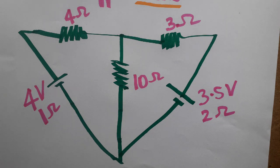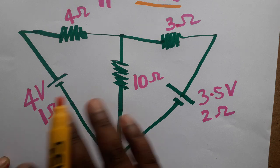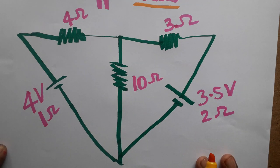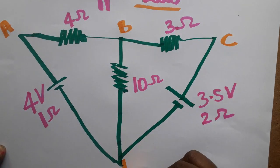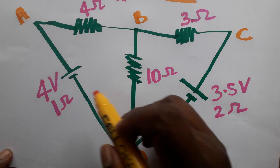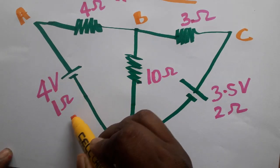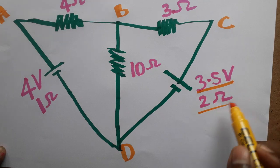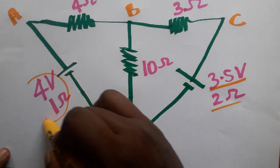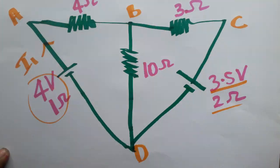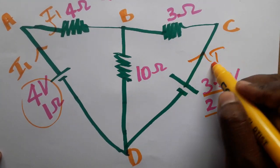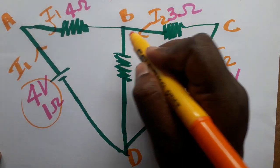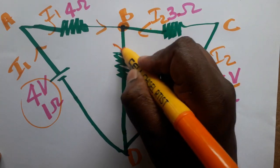First of all, you should mark the current direction and name the circuit nodes. You can label them A, B, C, D or P, Q, R, S — your choice. The 4-volt battery has 1 ohm internal resistance, and the 3.5-volt battery has 2 ohms internal resistance. From the 4-volt battery, current I1 flows; from the other side, current I2 comes in. At the junction, I1 plus I2 gives I3.